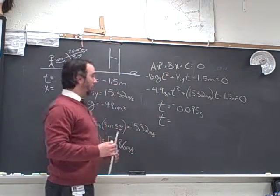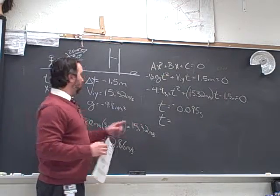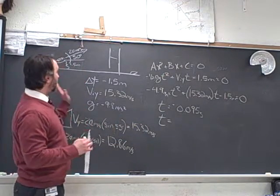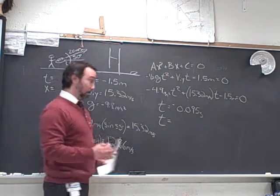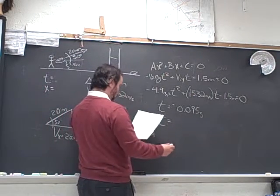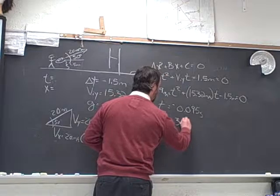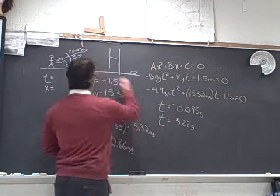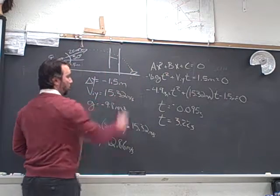That's actually the time it would have taken as a projectile launched from the ground, to go from the ground level up 1.5 meters, going at 20 meters per second at 50 degrees. The time that is going to be more meaningful for us is the 3.22 seconds, which is the time it will take to hit the ground over here.